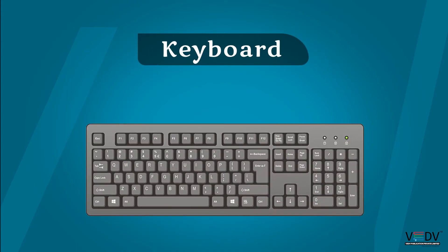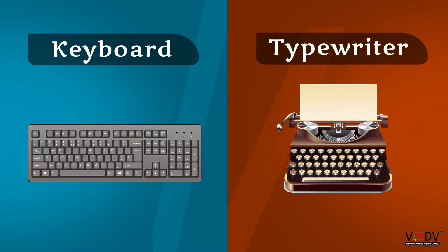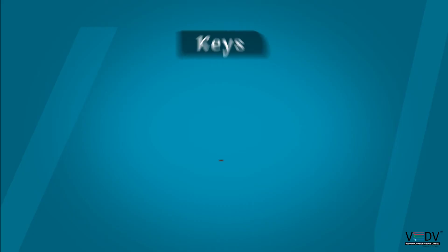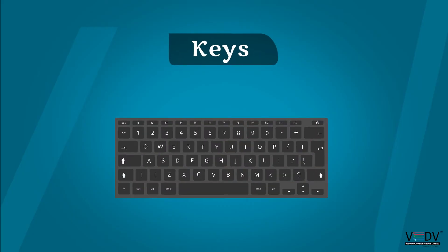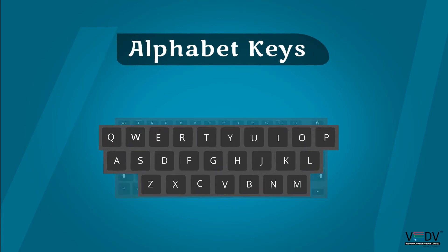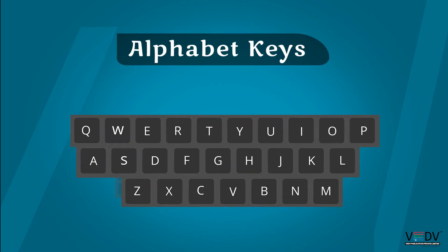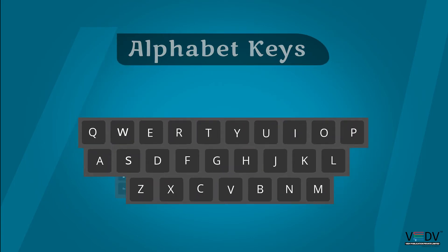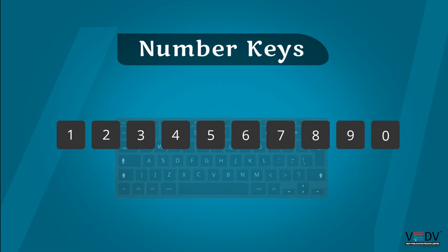Keyboard: A keyboard looks like a typewriter. A keyboard has small buttons called keys. A keyboard has alphabet and number keys.